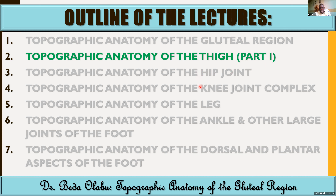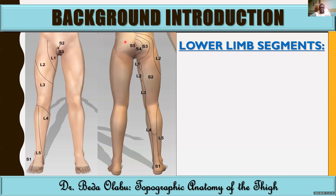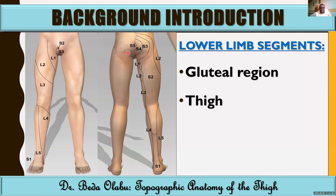After that we'll have other lectures on topographic anatomy of the lower limb. Just to bring you up to speed, the lower limb has barrier segments: the gluteal region, which we've already studied; the thigh, which we're now studying in two parts; and we also have the leg and foot. Between them we also have joints — the hip joint, knee joint, and ankle joint — which we'll also study in this lecture series at another time.